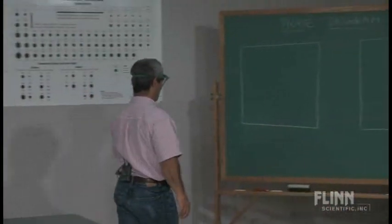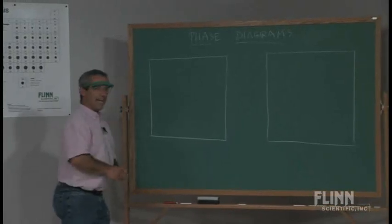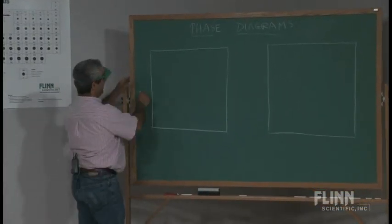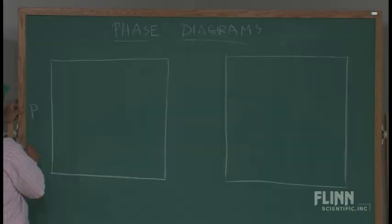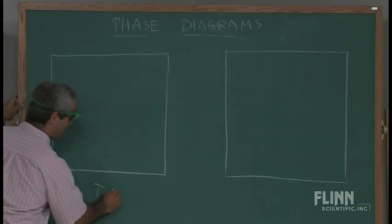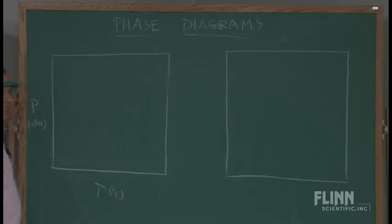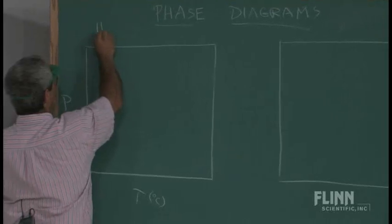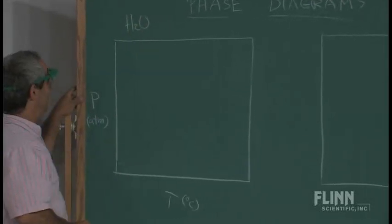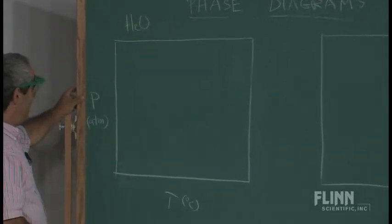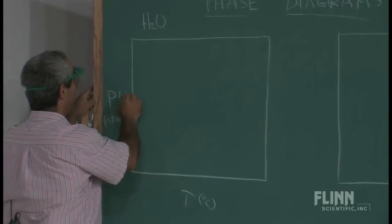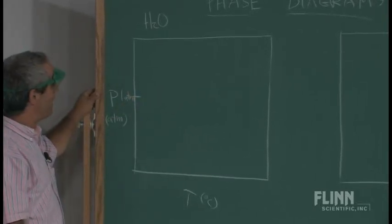So, what is a phase diagram? It's actually a map more than a graph, with the coordinates being pressure, usually we'll talk about those in atmospheres, versus temperature, and I'll use degrees Celsius here. We're going to start with a phase diagram of a substance we're much more familiar with, good old H2O.